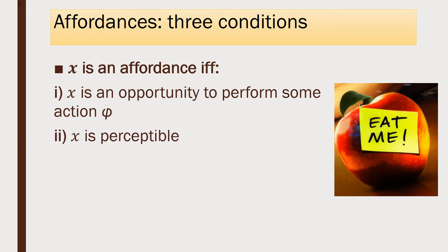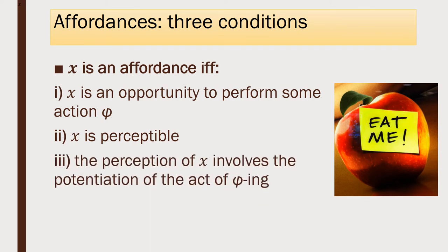The second condition is that this dispositional property is perceptible. It should be fairly uncontroversial that the apple has the dispositional property of being edible by me. What's more interesting is the claim that this property is a perceptible property of the apple — so besides seeing it as shiny, smooth, and as having a certain shape, I see it as being edible. This is a claim that Gibson himself emphasized. The third condition isn't something Gibson got into; it comes up more in the contemporary cognitive psychology literature. This is the condition that perceiving X involves the potentiation of the act of phi — roughly, when I see the edible apple, the act of eating is kind of primed, and my motor system gets ready to perform the act of eating.